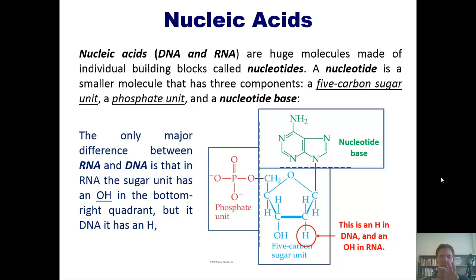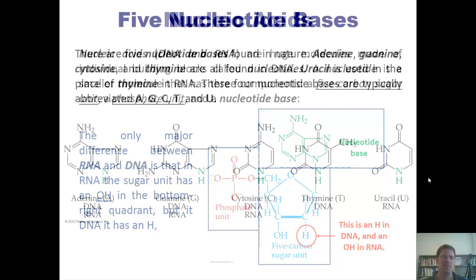Hence, the D in DNA stands for deoxyribo, whereas in RNA, it's just ribo. So you take away the oxy at this position, you have DNA. You leave the oxy or the OH group here, you have RNA. Got it? Okay. Let's go on then.